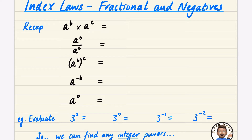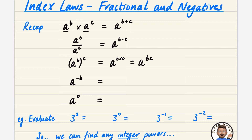As a quick recap, these are some of the index laws we've looked at so far. If they have the same base and you're multiplying, you can take the powers and add them together. If they have the same base and you're dividing, you subtract the powers — top power minus bottom power. If you have brackets, you multiply those two powers together, so it's A to the power of B times C. If you have the power of minus B, it's the same as 1 over A to the power of B. And A to the power of 0 evaluates as the number 1.